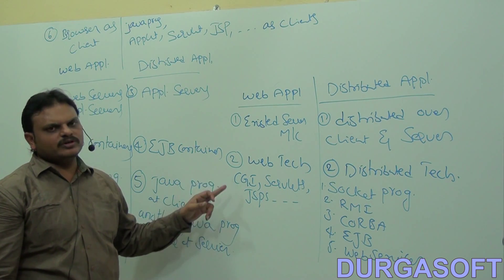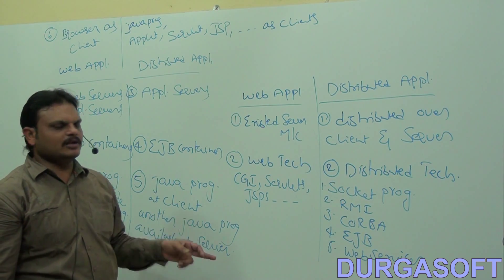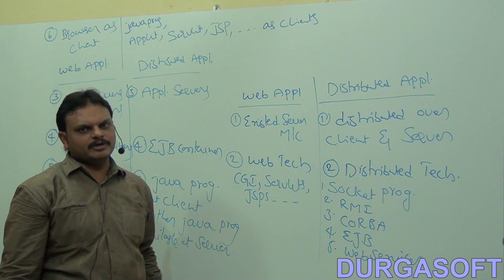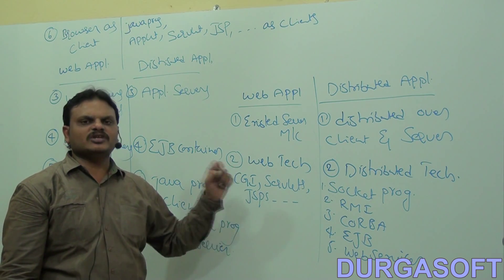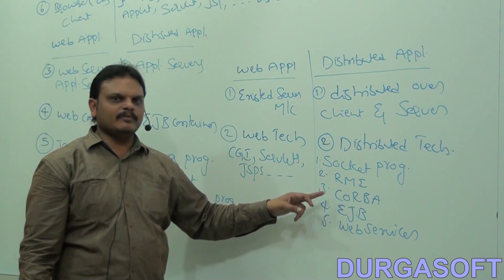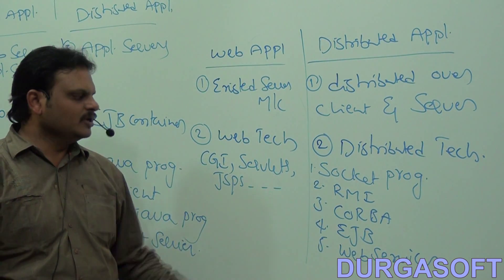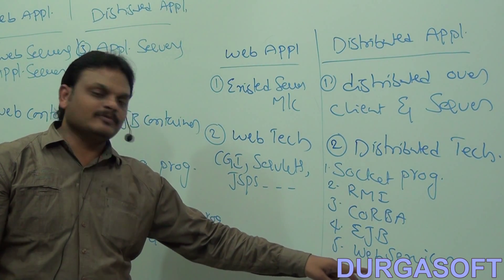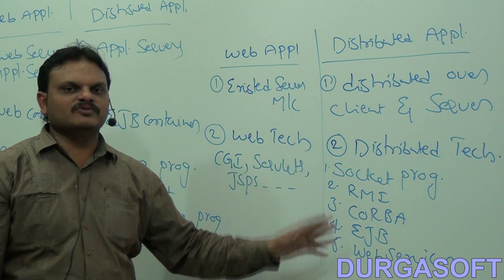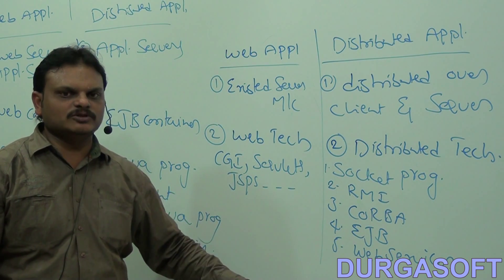Summarizing the remaining differences: to design web applications, web technologies like CGI, Servlets, and JSP are used; for distributed applications, distributed technologies like socket programming, RMI, CORBA, EJBs, and web services are used. Note that web services is a distributed technology — it is not for web application development. Web applications are executed by both web servers and application servers; distributed applications use only application servers because they require middleware services.